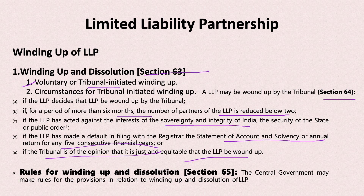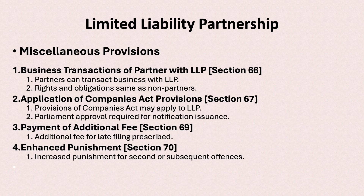The central government has power to frame rules for the dissolution process under Section 65. Other miscellaneous provisions include Section 66 covering LLP and partners, and Section 69 which allows the central government to apply provisions from the Companies Act to LLPs. Under Section 69, repeat wrongful acts result in increasing penalties — every second offense doubles the penalty.